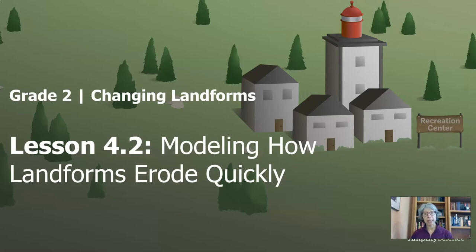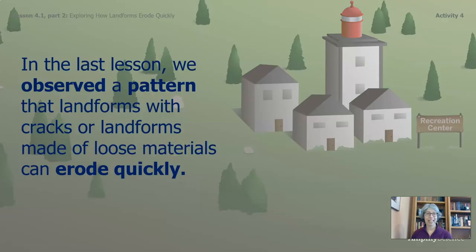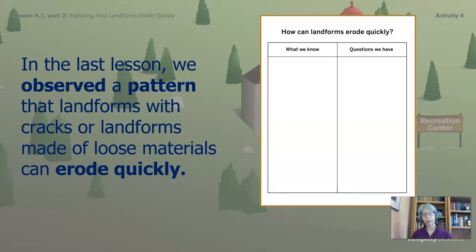You will need the packet. If you don't have the packet to write with or on, you can just use a regular piece of paper and writing utensil that you have at home. In the last session, we observed a pattern that landforms with cracks or landforms made of loose materials can erode quickly. You may want to return to this part of your packet and look at the questions that you wrote — you might have answers to those questions, and those answers can be moved to the What We Know column. You may have new questions too.